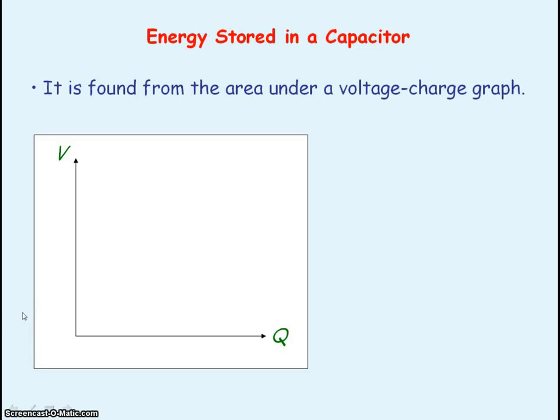The energy stored in a capacitor is found from the area under a voltage-charge graph. And if you recall, the equation for a capacitor is given by Q equals CV, where Q is the charge stored on the capacitor, C is the capacitance of a capacitor, which is a constant for a given capacitor, and V is the voltage across the capacitor.